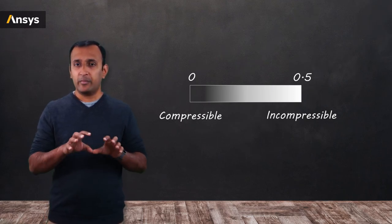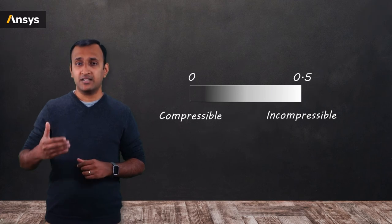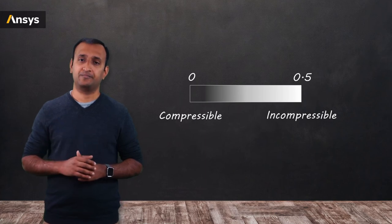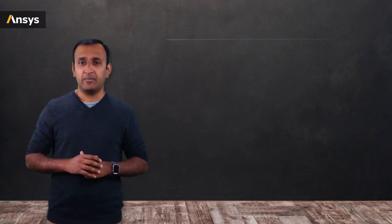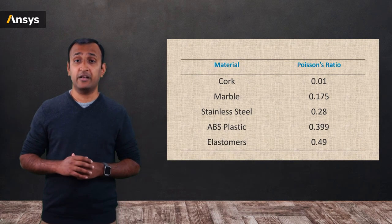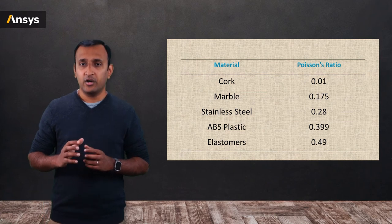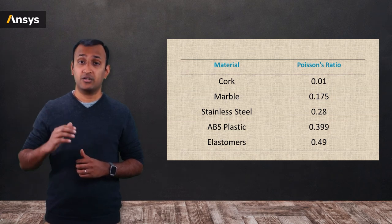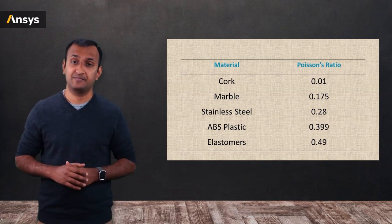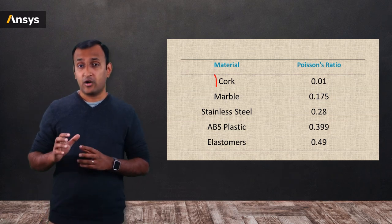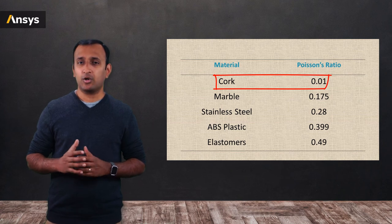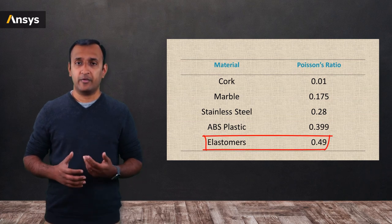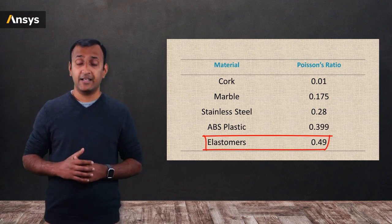Most materials fall somewhere between this range, meaning they all resist change in volume to some extent, but they may still experience some amount of change in volume. Here's a table of values of Poisson's ratio for some common materials. You'll notice that materials with smaller values are generally compressible in nature, and values with higher Poisson's ratio are usually incompressible. For instance, cork is known to be compressible and has a Poisson's ratio which is almost 0. On the other hand, elastomers are nearly incompressible and their Poisson's ratio is close to 0.5.